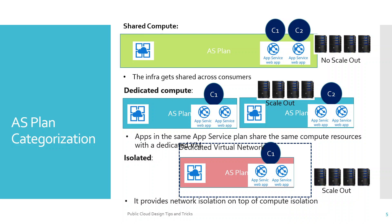The limitation of Shared Compute is that it cannot be scaled out. Coming to Dedicated Compute, the apps in the same App Service Plan share the same compute resources with a dedicated VM. You can map one consumer to one dedicated App Service Plan — a one-to-one mapping. Within that plan, the consumer can deploy a single app or multiple apps, providing isolation on the compute power for that consumer.